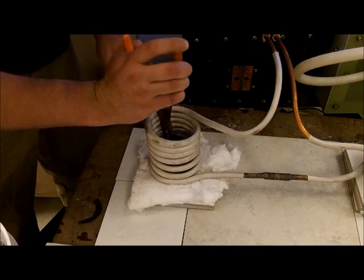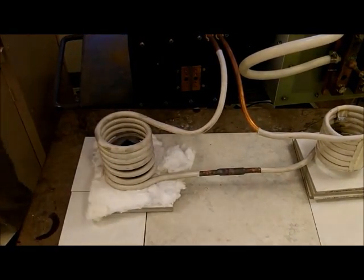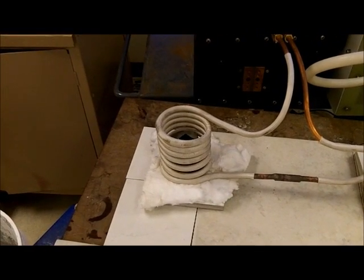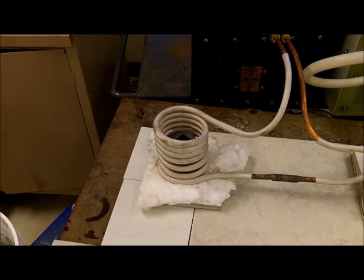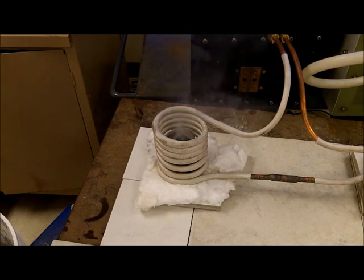We are now placing the socket within the coil and centering it. The power is now being turned on and the frequency on the EcoHeat induction heating system is set to 10 kHz.